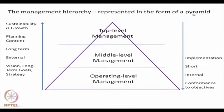Every organisation has a hierarchical management structure defining authority relationships, grouped into three types. This looks like a pyramid — called a management pyramid — divided into three areas: top level management, middle level management, and operating level management. The base is wide because there are large numbers of operating level managers, fewer at the top, and middle level personnel are in between the two extremes.